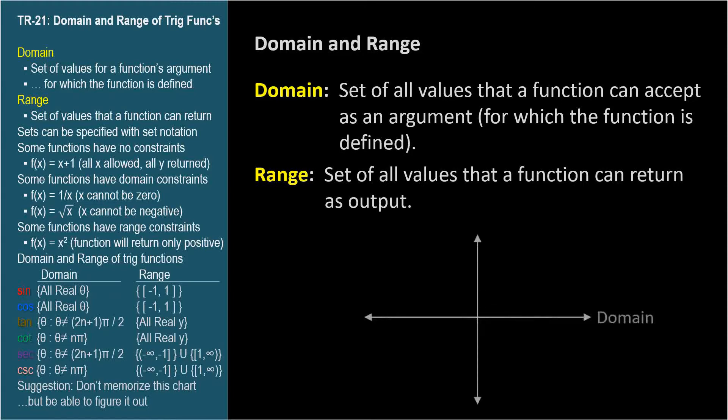So when we graph a function, the domain corresponds to possible values along the horizontal axis, input arguments for which the function has a value. And the range corresponds to possible values along the vertical axis, values that the function can evaluate to.